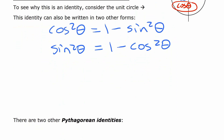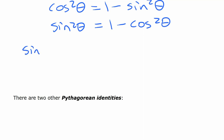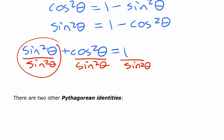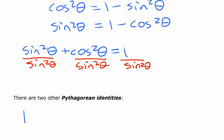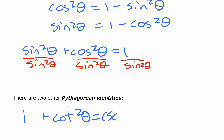There are two other Pythagorean identities related to that. If we take sine squared plus cos squared equals one and divide both sides by sine squared, we get that sine squared over sine squared is one, cos squared over sine squared is cotangent squared, and one over sine squared is cosecant squared. So that gives us: one plus cotangent squared equals cosecant squared.